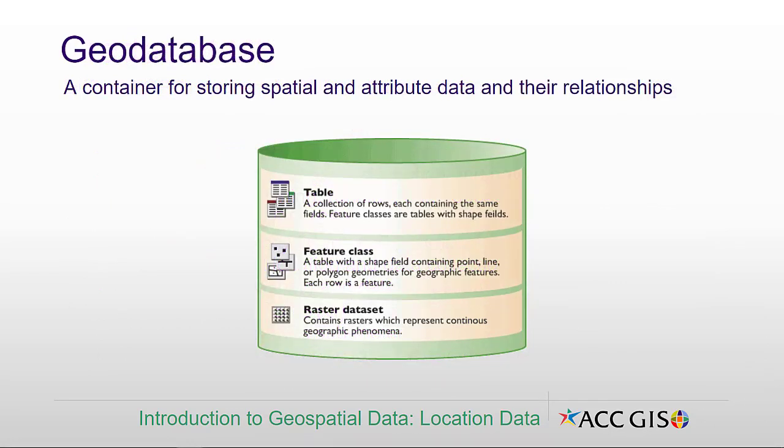There's one more advanced GeoDatabase object to discuss, but before we do, let's review what a GeoDatabase is — basically a container for storing spatial and attribute data and their relationships. There were three basic data types stored in a GeoDatabase: tabular data, vector feature classes, and continuous raster data sets.